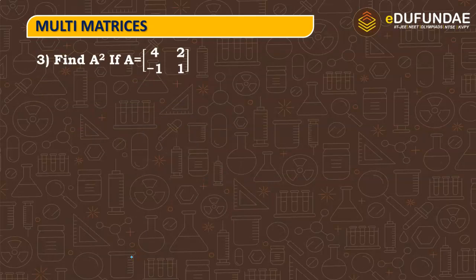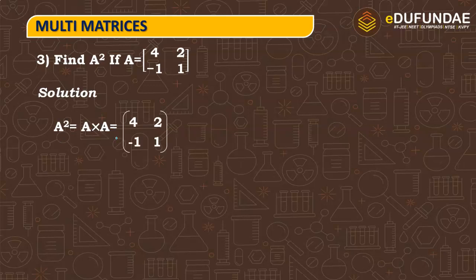So, next question is, if A square is equal to, find A square, we find out if A is equal to 4, 2, minus 1, 1. So, what do we do? A square can be written as A into A. If A power 2 is, then A into A will be in the matrix. And this means that A matrix will multiply with A.